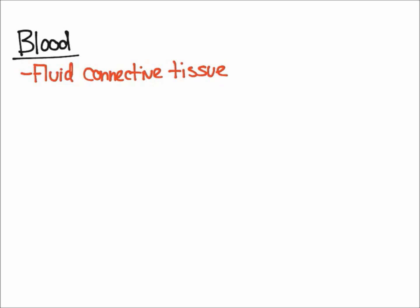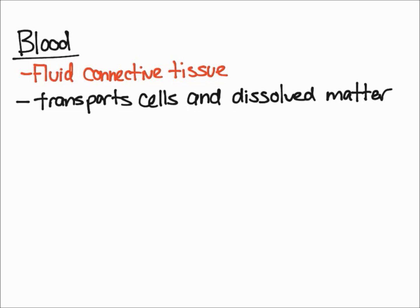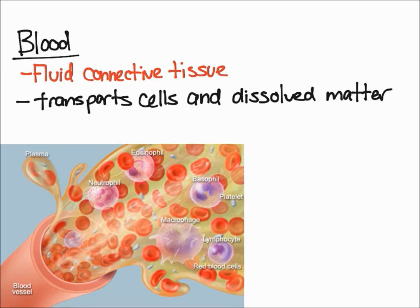In this video, I'm going to talk about the anatomy of blood. Blood is the only liquid connective tissue, and that's what makes it unique. Essentially, what blood does is it transports cells and dissolved matter from place to place. Blood is made up of many different components, as shown in the diagram below.